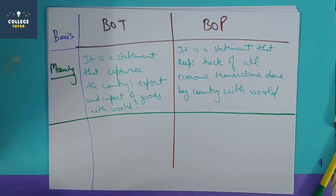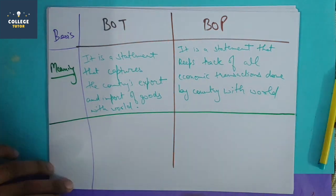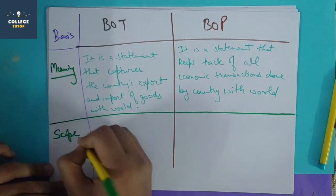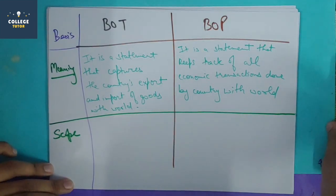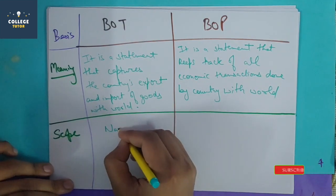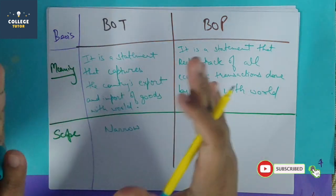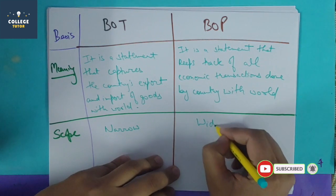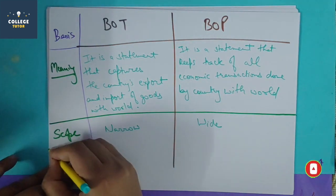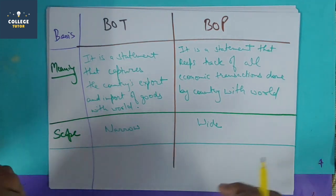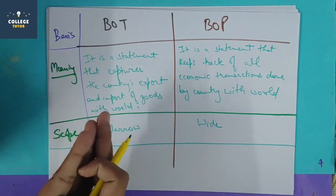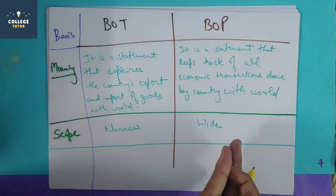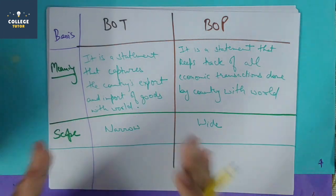Now let's talk about scope. Balance of trade scope as compared to balance of payment is quite narrow, because balance of trade is only concerned with goods. But in balance of payment, I can cover all the things. In other words, you can also write that balance of trade is one part of balance of payment.